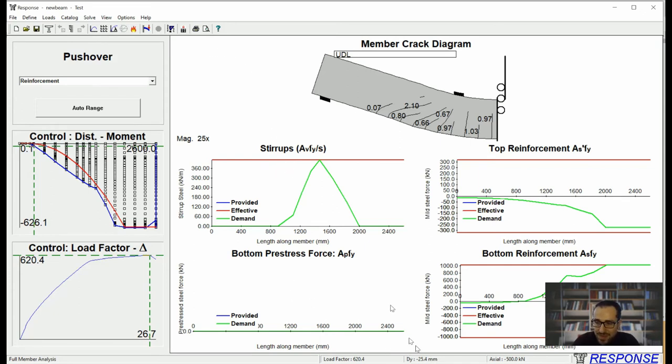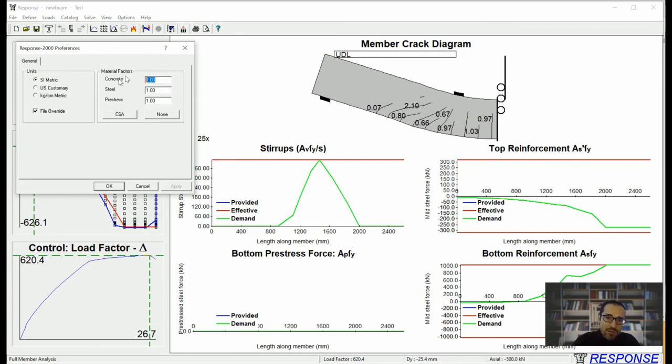The results we got from this analysis are unfactored. So we didn't apply any material resistance factors. We didn't do LRFD. And the numbers represent expected failure condition, no safety margin, no safety factor considered. In order to consider that, you can come here and you can input your reduction coefficients.